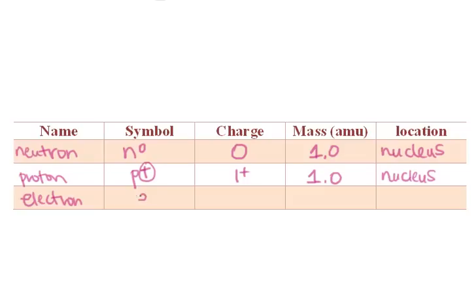And then the last subatomic particle is the electron, and that is E-, and that charge is one-minus. And electrons are small. They are found to only weigh 0.0005 atomic mass units, and electrons orbit the nucleus.